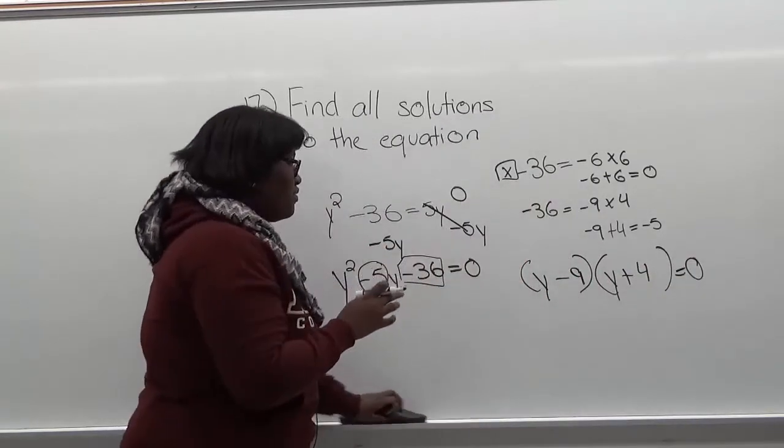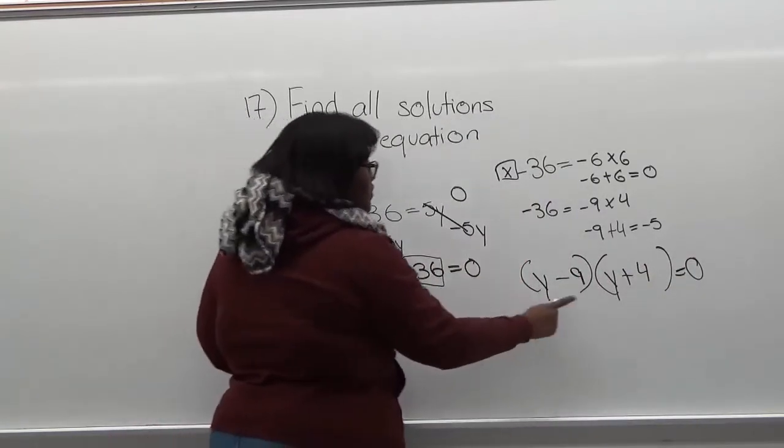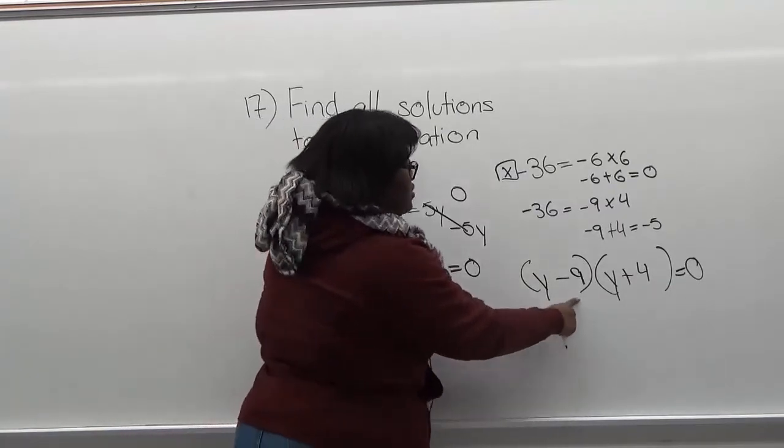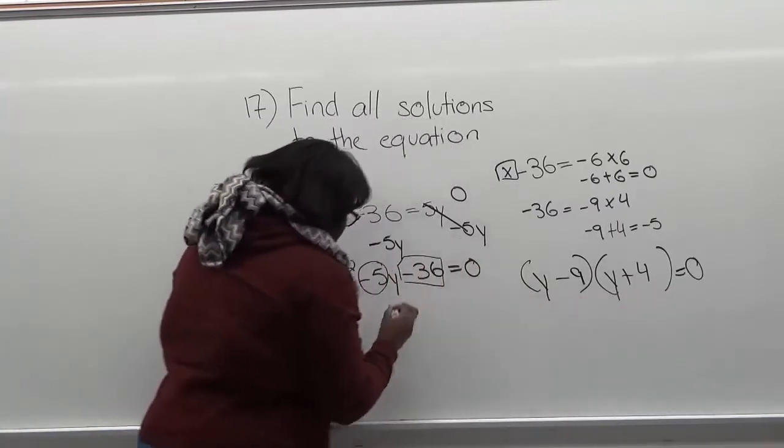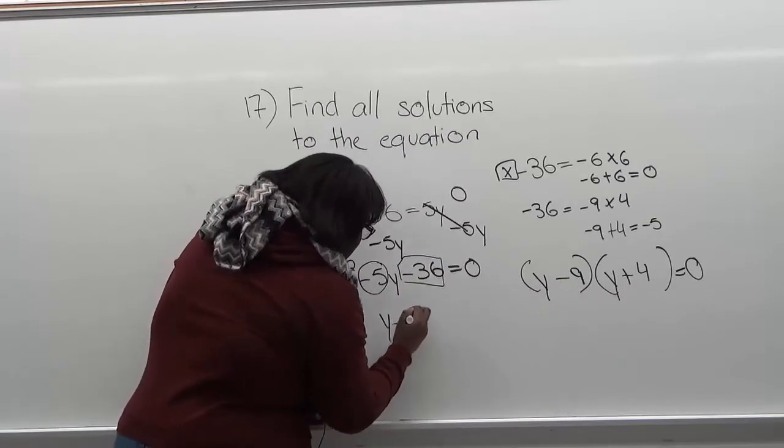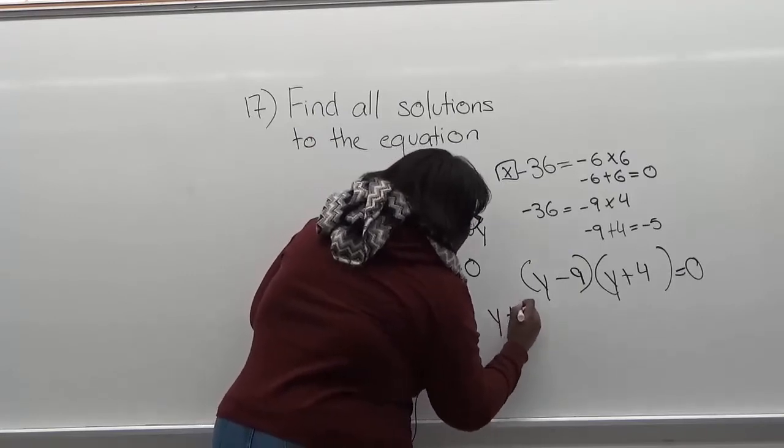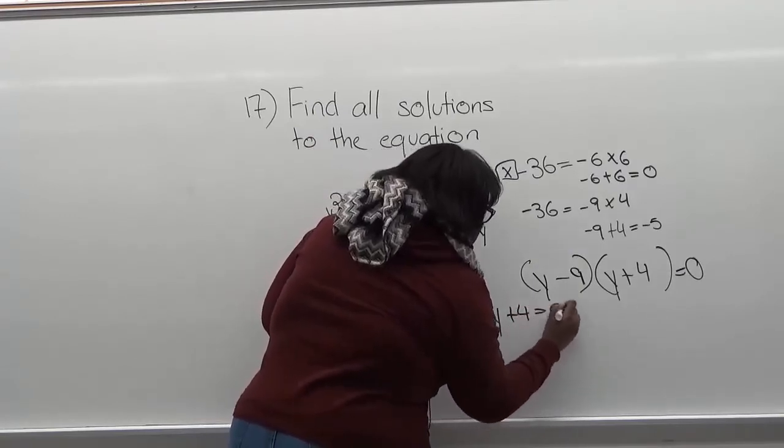Now that you have these two factors of this expression, you're going to equal each expression to 0. You're going to have y minus 9 equal to 0 and y plus 4 equal to 0.